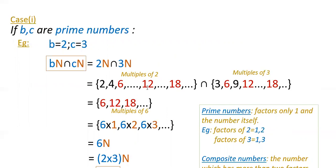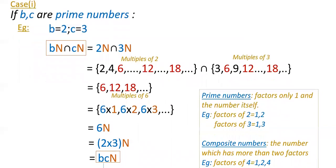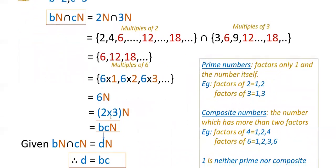So the intersection gives us {6, 12, 18, ...}, which are multiples of 6. We can write this as {6·1, 6·2, 6·3, ...} and since N represents natural numbers 1, 2, 3, etc., this set can be written as 6N.